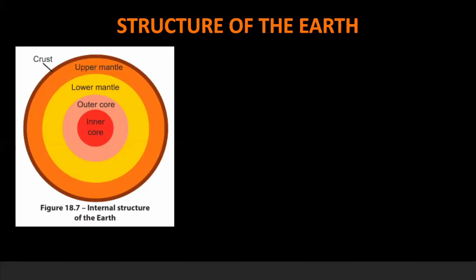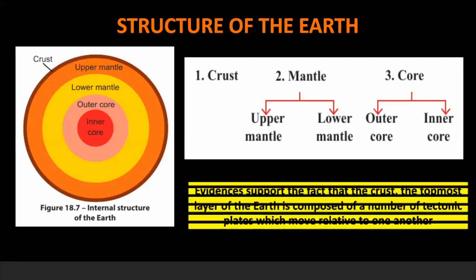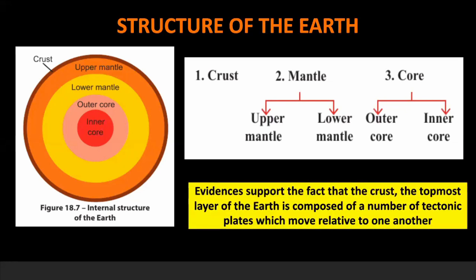Structure of the earth. In order to understand how earthquakes happen, we need to know about the structure of the earth. The earth has three layers: crust, mantle and core. The mantle is made up of an upper mantle and lower mantle region. The core is made up of an outer core and inner core region. Evidence supports the fact that the crust, the topmost layer of the earth, is composed of a number of tectonic plates which move relative to one another.